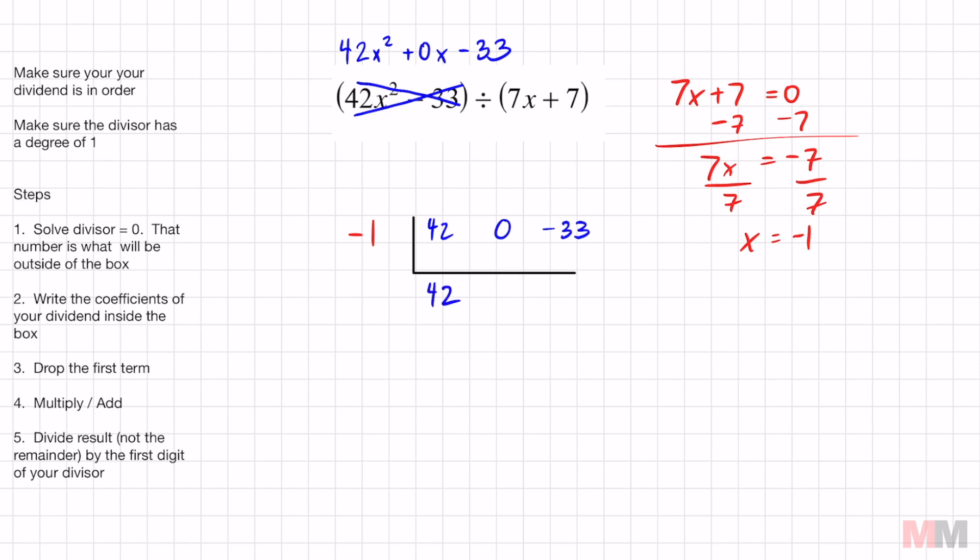Now we drop the first term right under here. And then we take negative 1 times 42. Easy, negative 42. 0 minus 42 is what that says. And we put that result right under there. Repeat the same thing. Negative 1 times negative 42 is a positive 42. And if I add those up, I get a positive 9. That's my remainder.